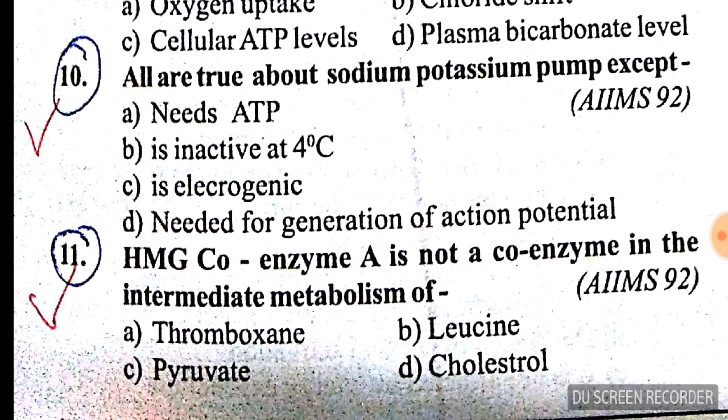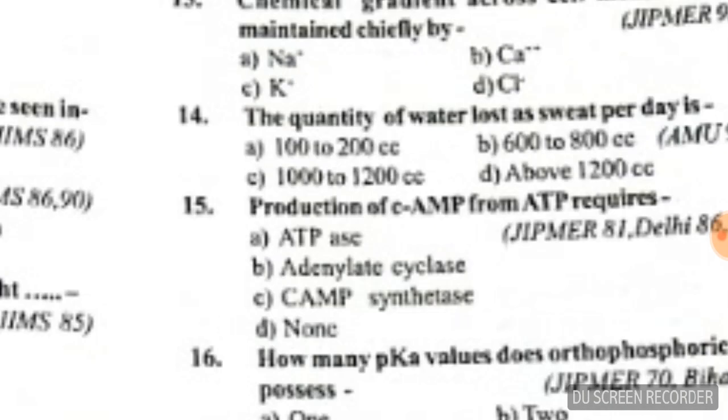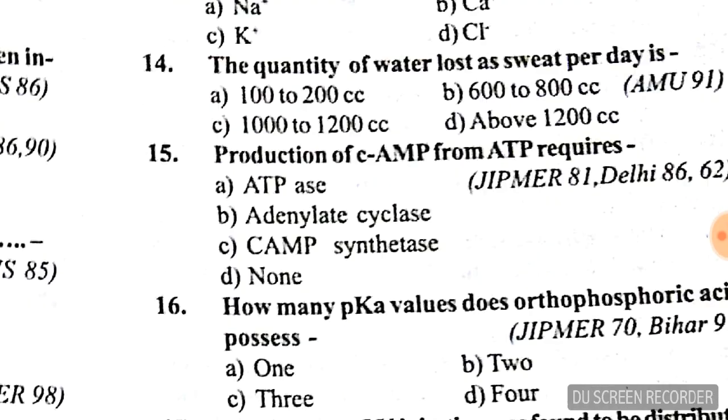Option D is the right answer — the sodium-potassium pump is not responsible for generation of action potential. HMG CoA is not a coenzyme in intermediate metabolism of thromboxane and pyruvate; it is responsible for cholesterol and leucine synthesis.